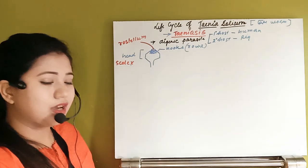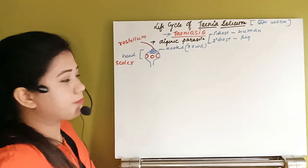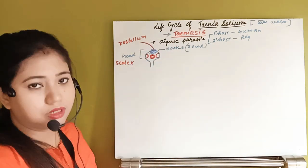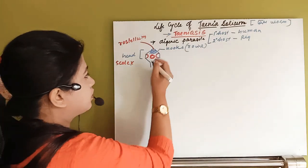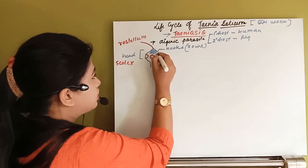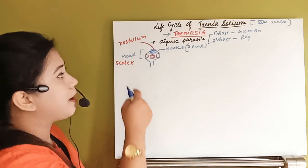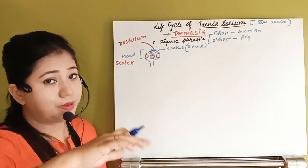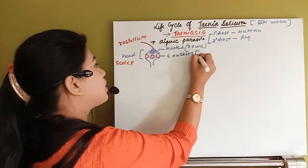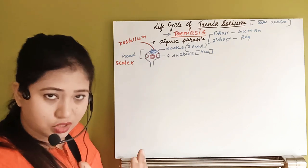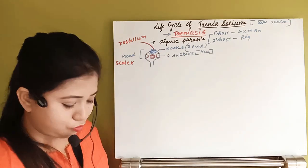Throughout the body there are four small suckers present, and in this case these are true suckers. From this side you can see three — one complete and two half on the sides. These are true suckers. So this organism's first part, the scolex, has a rostellum guarded by two rows of hooks and four true suckers. The function of these suckers is to take up bile juice, blood, or lymph from the host.